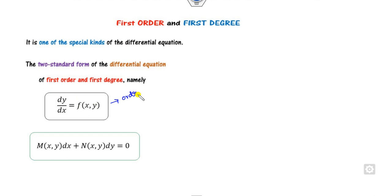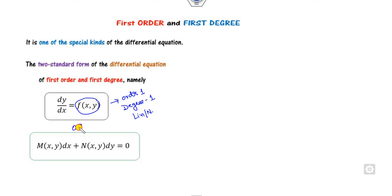The order of this differential equation is 1, the degree is 1, and whether it is linear or non-linear depends upon the nature of f(x). The first order, first degree equation can also be written in another form because dy/dx equals minus M function of x,y over the denominator.